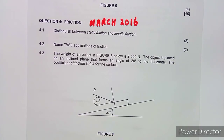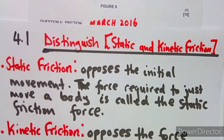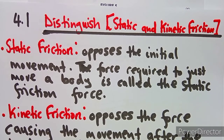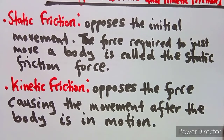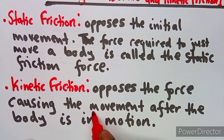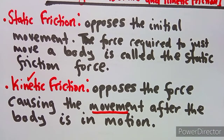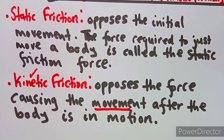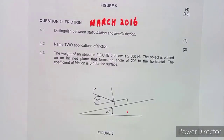The first question, 4.1, we had to distinguish between static friction and kinetic friction. So static friction opposes the initial movement — that is, the force required to just move a body is called the static friction force. Then kinetic friction opposes the force causing the movement. Kinetic has to do with movement after the body is in motion. Those are the two things for the first part.